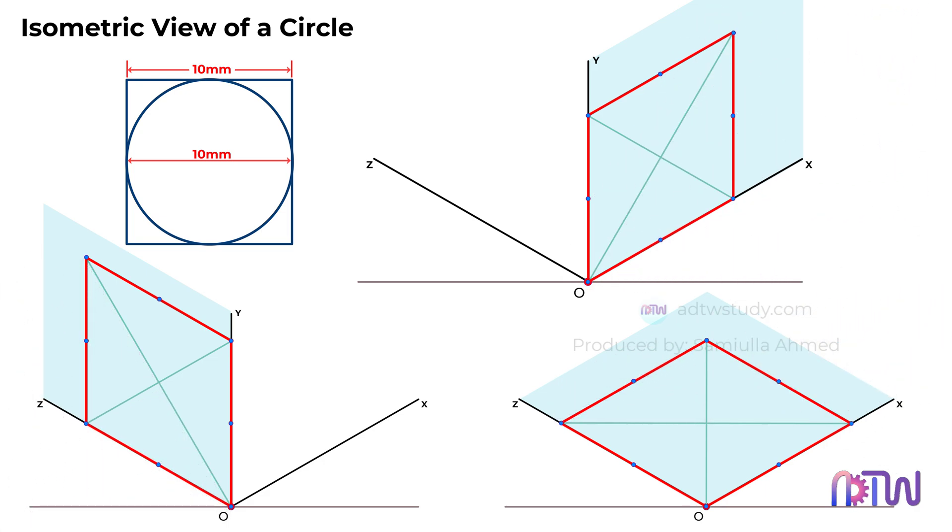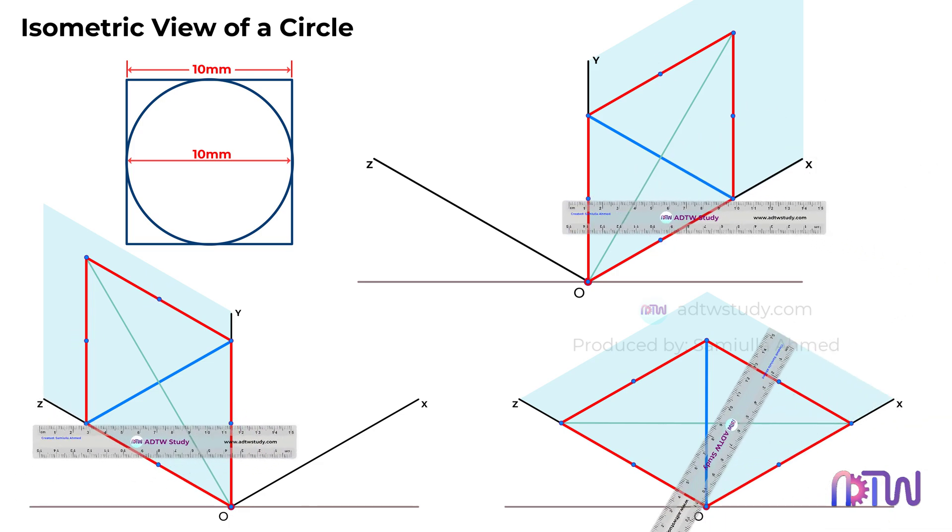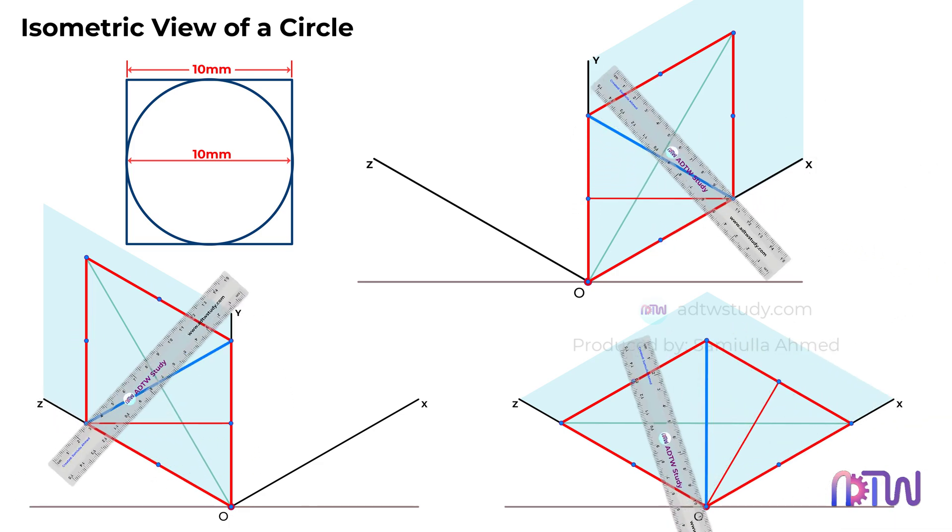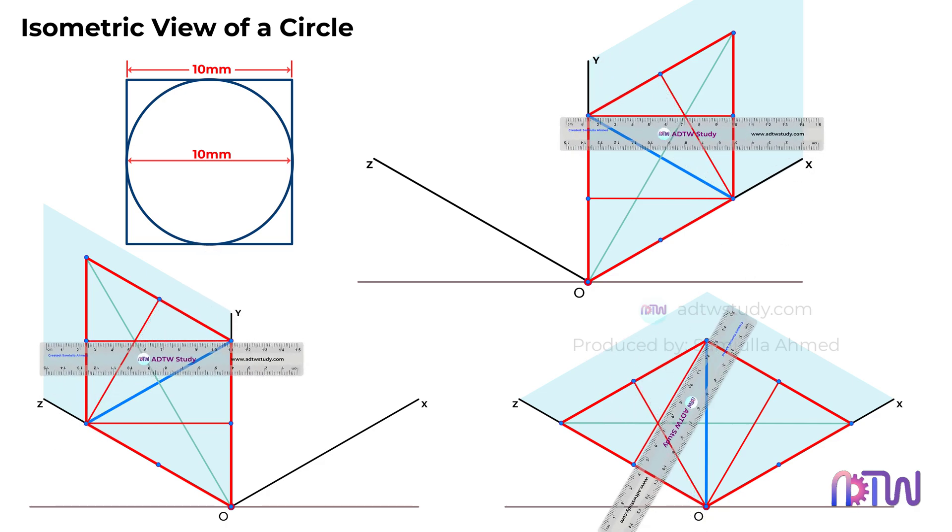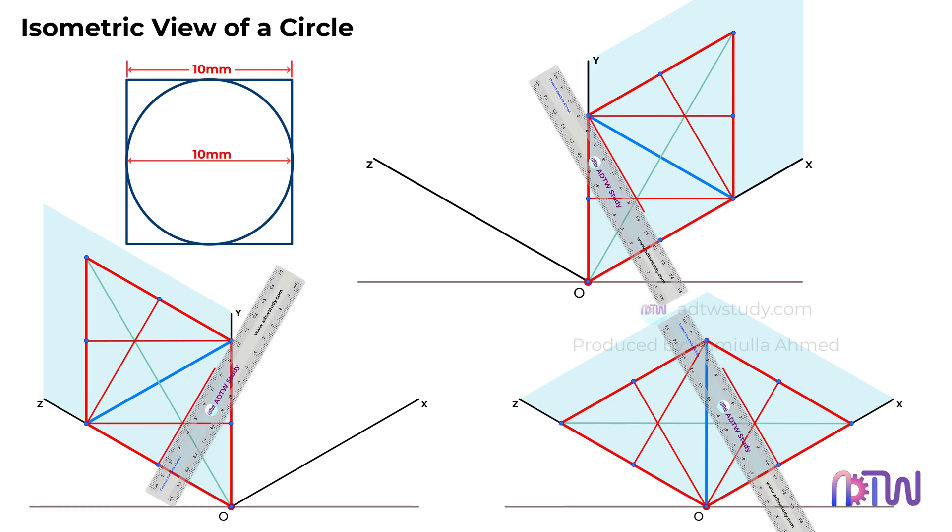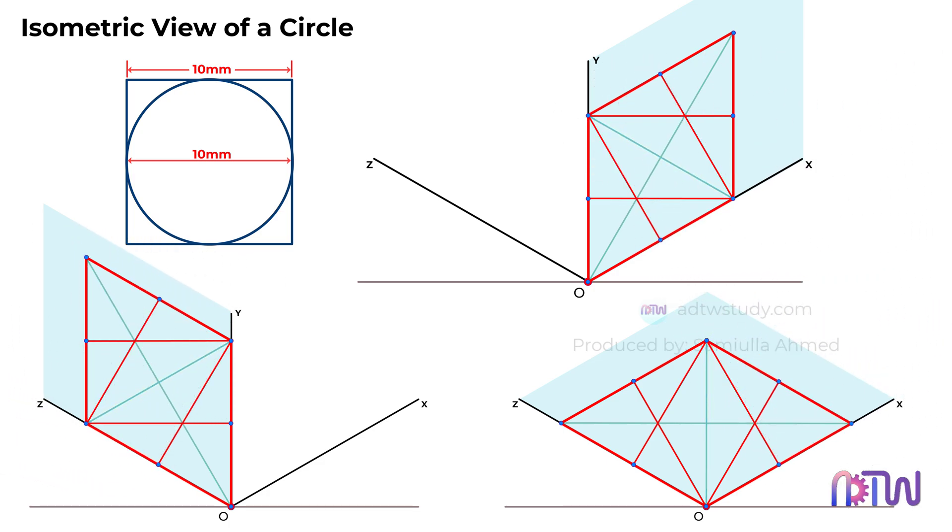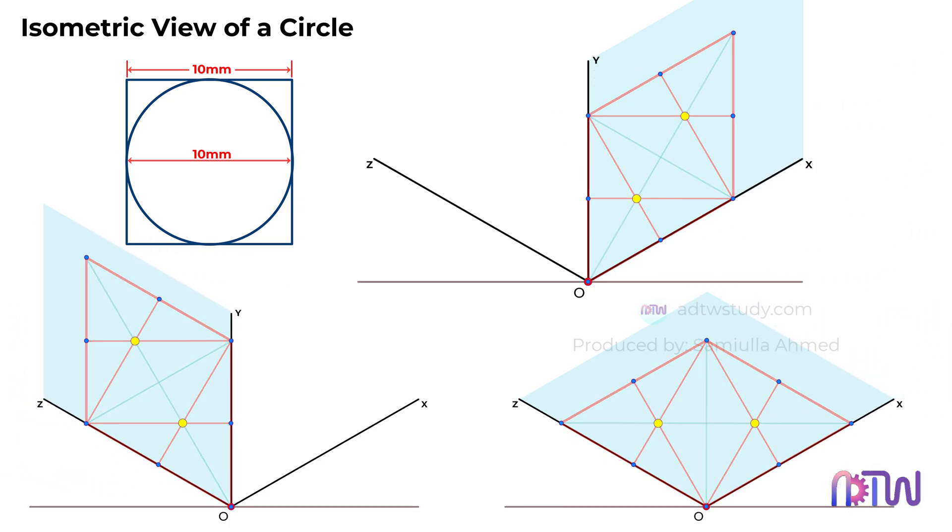In the end, join the endpoints of the smaller diagonal of the square with these 4 points. This is it, we have got the required centers for the arcs to be drawn. Now using compass, we can draw the isometric circle as shown.